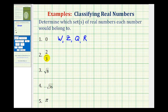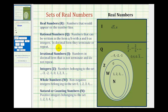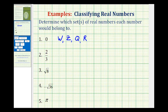Next, we have two-thirds. Looking at the Venn diagram, two-thirds is in the form of A over B, so it's rational. And all rational numbers are also real. So two-thirds belongs to the set of rational numbers and the set of real numbers.